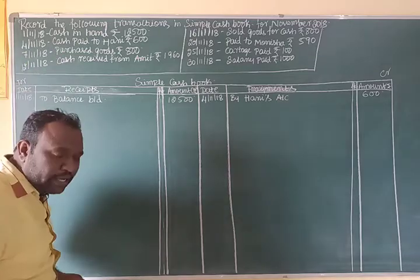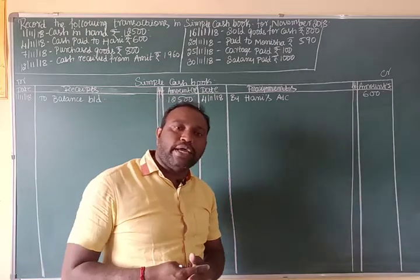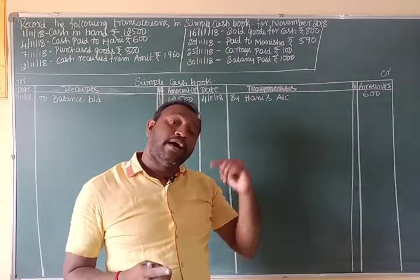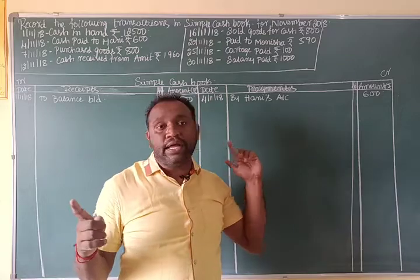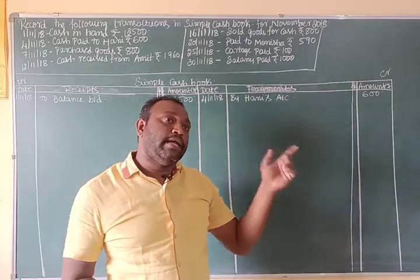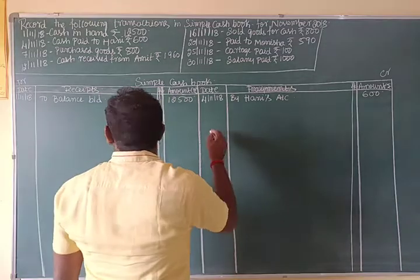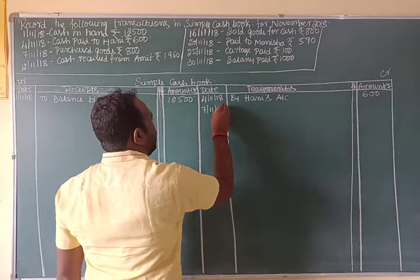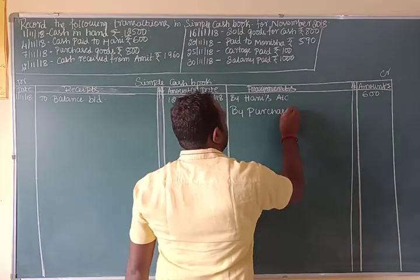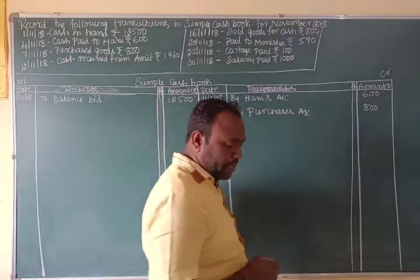Next, purchased goods for cash — Rs. 800. When we are purchasing goods, we pay immediately in cash. Entry on the credit side: 8th November 2018, By Purchases Account — Rs. 800.